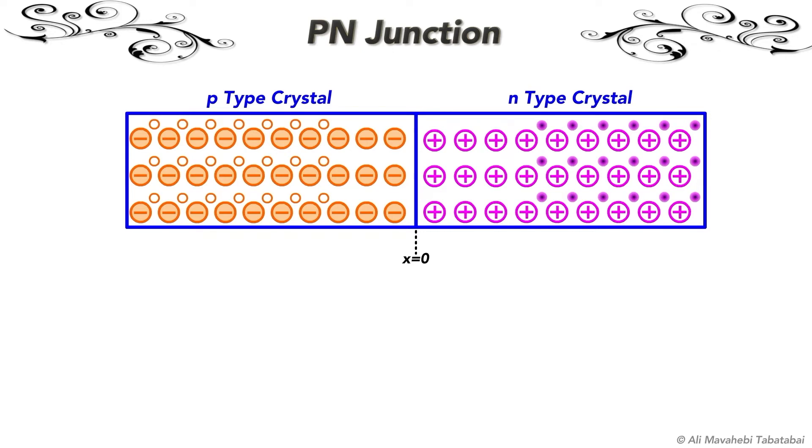The diffusion of electrons and holes across the junction and recombination of electrons and holes takes place for a short time because as a result of the displacement of the charges, an electric field appears across the junction. When this internal field becomes large enough, it restrains the process of diffusion.